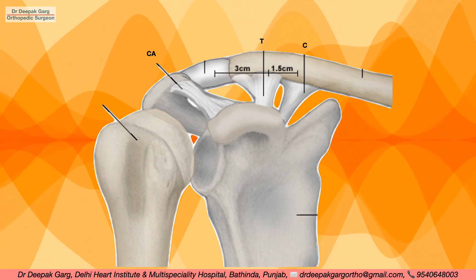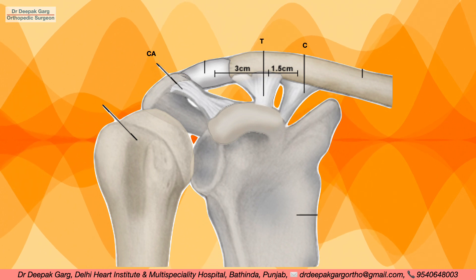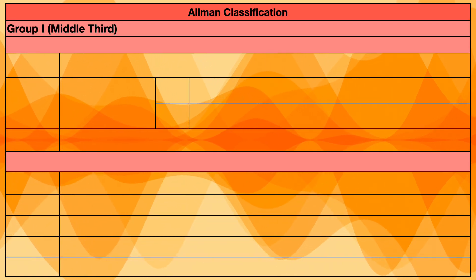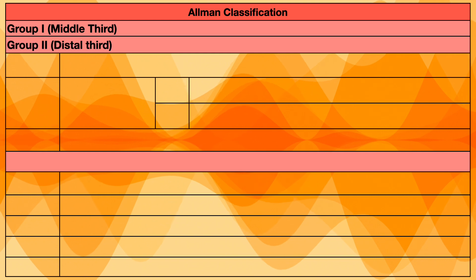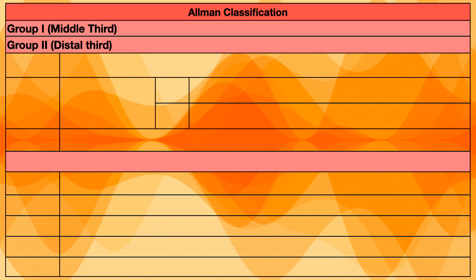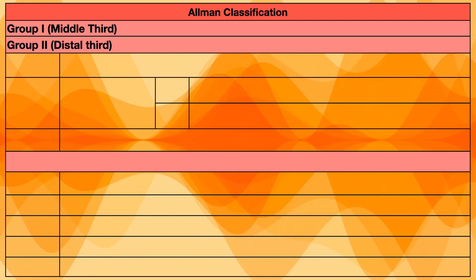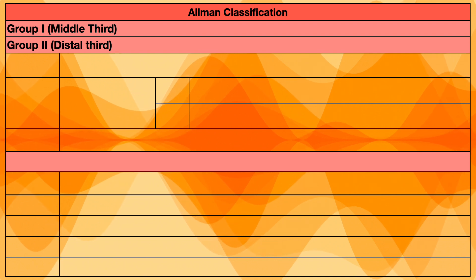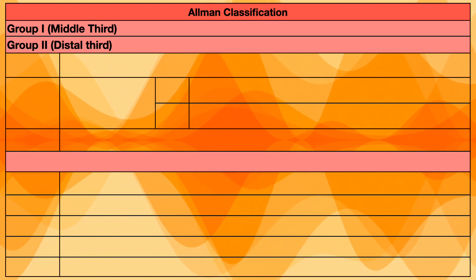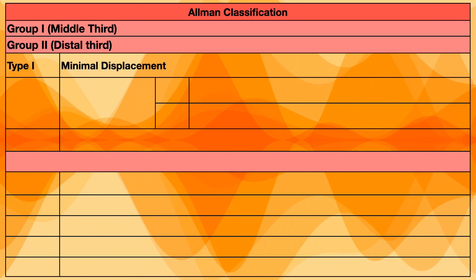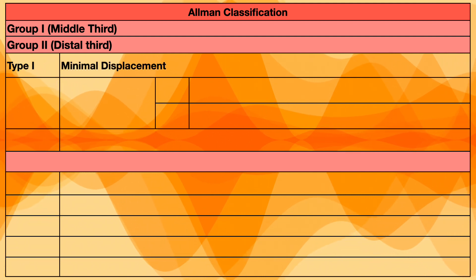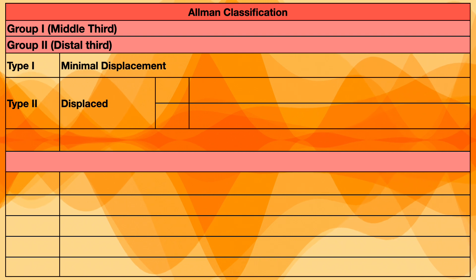Keeping the anatomy in mind, let's discuss the classification. Group one is the middle third fracture. Group two is the distal third clavicle fracture. The distal third is further divided into type 1, which is a minimally displaced fracture, and type 2, which is a displaced fracture.